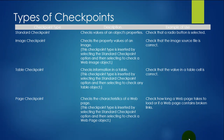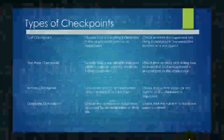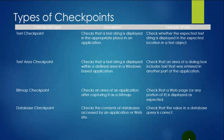The first one is the standard checkpoint, which checks the values of an object's properties. There is an image checkpoint to validate the image displayed in the application. There is a table checkpoint to check information in a table. Page checkpoint checks the characteristics of a webpage, such as response time and broken links. There is a text checkpoint to check the string displayed in the application, and a text area checkpoint to check text strings displayed within a defined area in Windows-based applications. There is also a bitmap checkpoint to check an area of an application after capturing it as a bitmap, and a DB checkpoint.